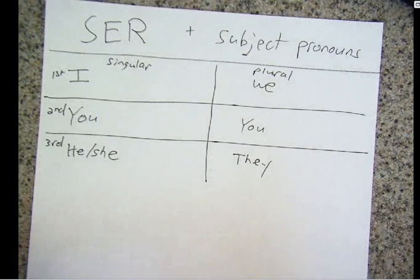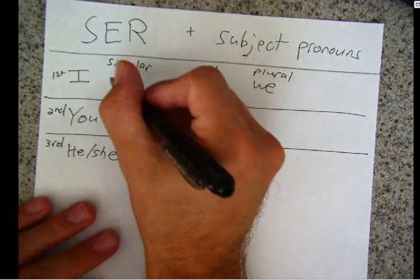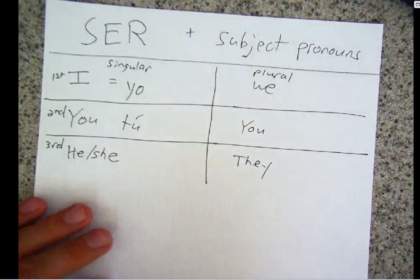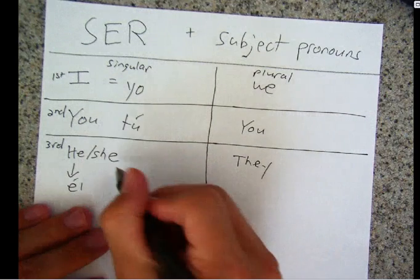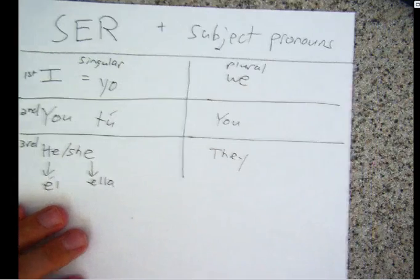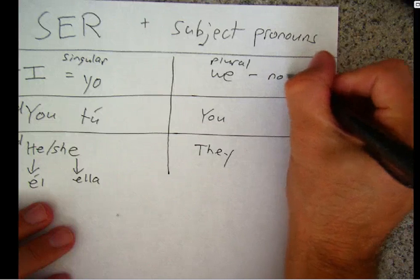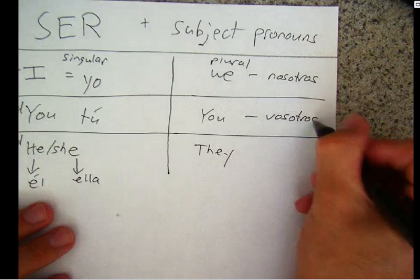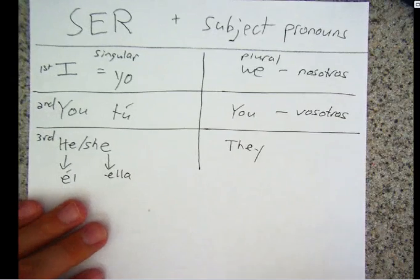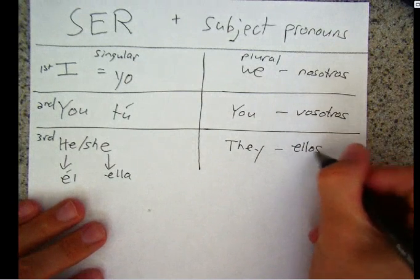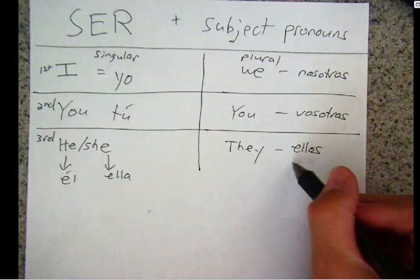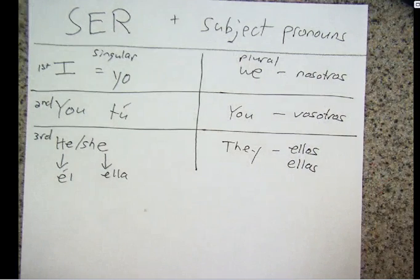We have to learn how to say these words in the other language. I is yo. You is tú. Él means he. Ella means she. We is nosotros. You plural is vosotros, used only in Spain. They would be ellos for all guys or a guys-and-girls mixed group. Ellas is used for just all girls.